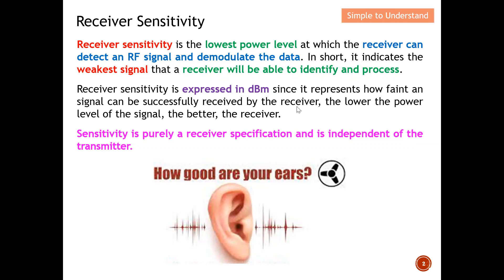Receiver sensitivity is expressed in dBm, since it represents how faint a signal can be successfully received. Typically this will be a very small number, so we use dBm to quantify it. The lower the power level of the signal the receiver can detect, the better the receiver. Ideally we want receiver sensitivity to be as small as possible so we can detect the weakest signal.